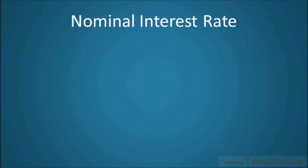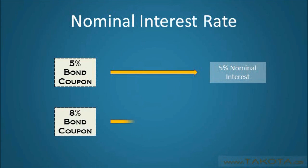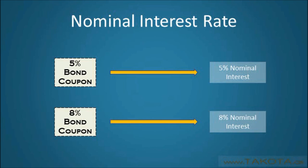For example, if a bond has a coupon or interest rate of 5%, then its nominal interest rate is also 5%, and if a bond has a coupon or interest rate of 8%, then its nominal interest rate is 8%, and so forth.